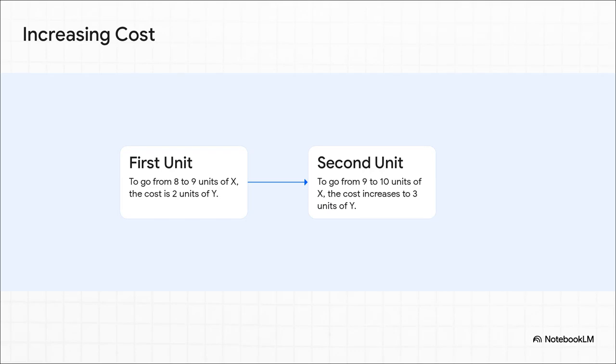With this bowed-out curve, the opportunity cost actually increases the more you produce of one thing. So that first extra unit of X might cost you two units of Y. But to get the next unit of X, you might have to give up three units of Y. So why does that happen?